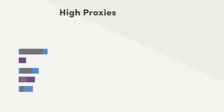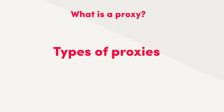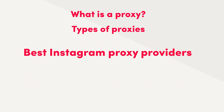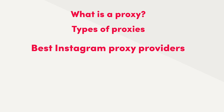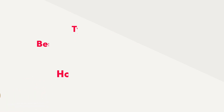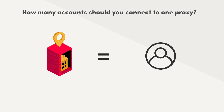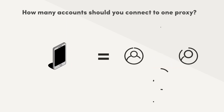Now you know what a proxy is, what type you need, and you've selected your provider — what's next? You need to know how to properly use the proxies. We don't want you to get action limited or your IP blocked. First order of business: how many accounts should you connect to one proxy? The answer is easy — one proxy, one account for residential IPs, and up to 10 accounts for mobile proxies.